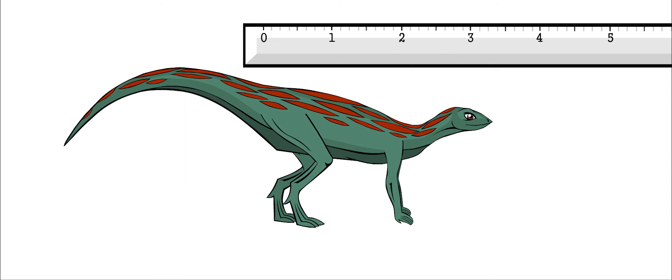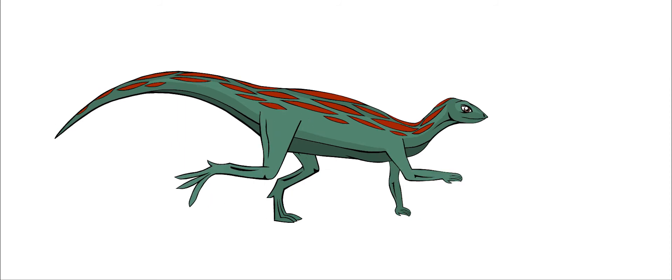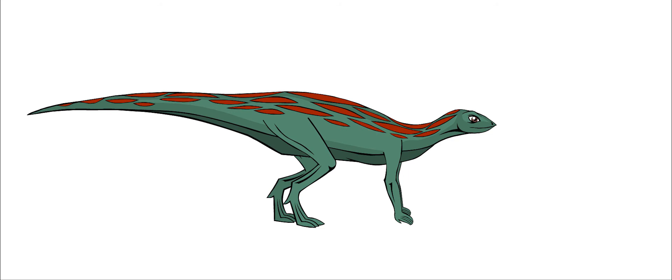It had four toes on its feet and five fingers on its hands. Its arms were short and it had a long, pointed tail.